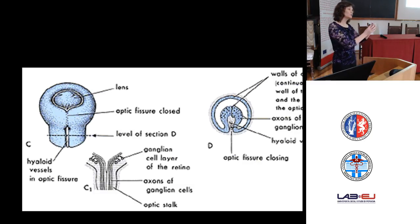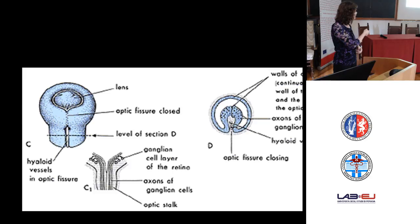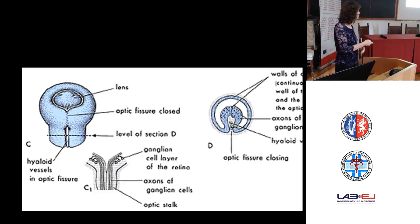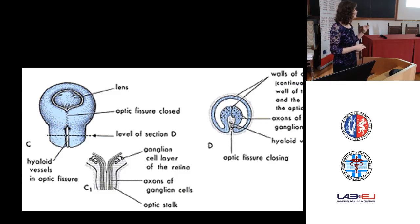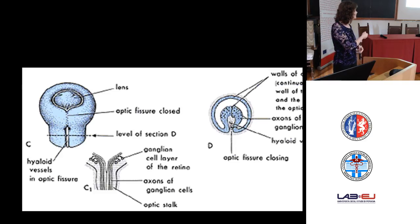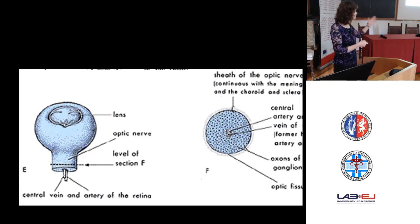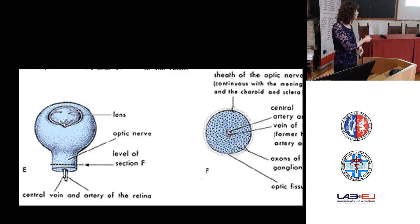This fissure should close because the eye should be a closed structure. The vessels will be incorporated into the globe and into the optic nerve. As we will discuss with coloboma, that means this fissure did not close completely. At a more advanced stage, all the vasculature is incorporated into the forming globe and optic nerve.